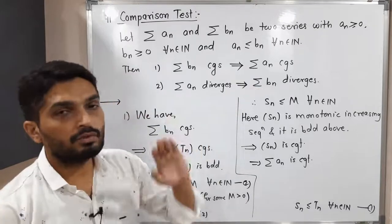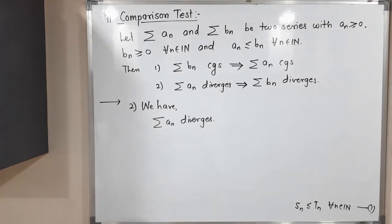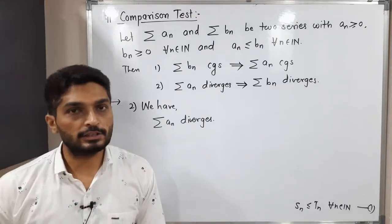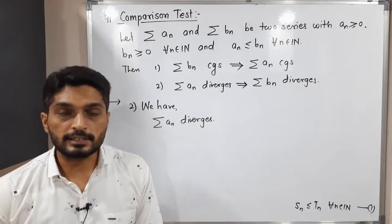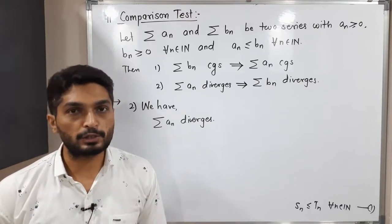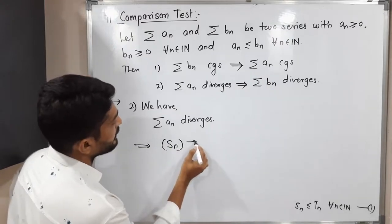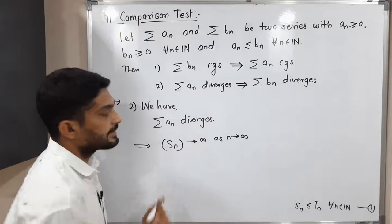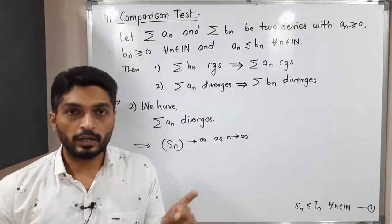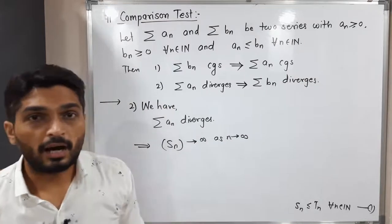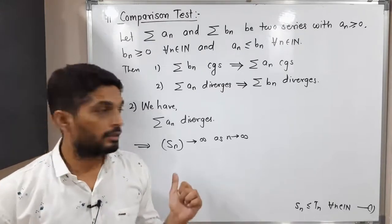Now let us discuss the second part. We are given that summation aₙ is a divergent series, and we need to prove that summation bₙ is also divergent. When a series is divergent, the corresponding sequence of partial sums is also divergent. Since aₙ has non-negative terms, there is no possibility of diverging to minus infinity, so Sₙ diverges to infinity as n tends to infinity.